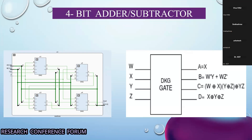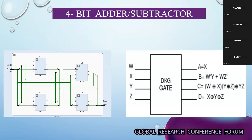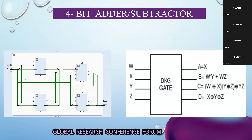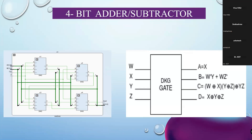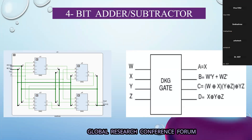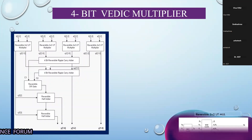For the design of the adder and subtractor block, a reversible DKG gate has been used. It is a 4-input and 4-output gate. It acts as a full adder — a single DKG gate acts as a full adder. So 4 gates are cascaded for getting a 4-bit adder-subtractor block.